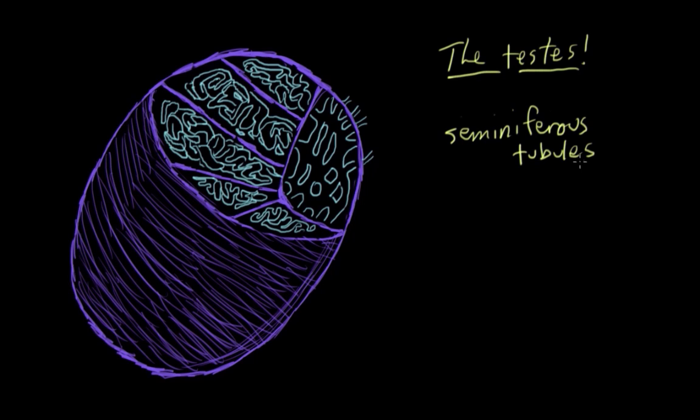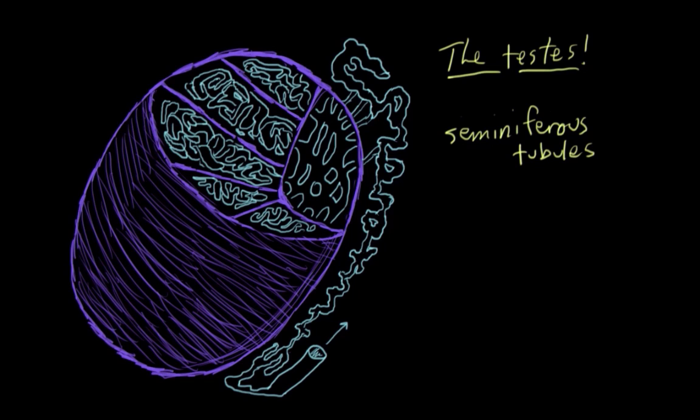The sperm are made in the seminiferous tubules, and then they travel out of the tubules and into the epididymis to mature and get ready to head off via ejaculation to try to find an egg to fertilize. So to appreciate the process of sperm production and how it all happens, we need to take a look inside the seminiferous tubules.